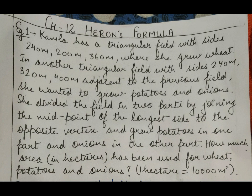In another triangular field with sides 240 meter, 320 meter, and 400 meter adjacent to the previous field, she wanted to grow potatoes and onions. She divided the field in two parts by joining the midpoint of the longest side to the opposite vertex, and grew potatoes in one part and onions in the other. How much area in hectares has been used for wheat, potatoes, and onions, where one hectare is equal to 10,000 meter square?